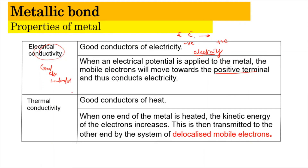Because the electrons are free to move, they can also be heated. When electrons are heated, they pass kinetic energy by moving more frequently, transferring energy from one side to the other due to electron movement. This causes heat to be transmitted from one end to another due to the delocalized mobile electrons, where what is being transferred is kinetic energy.